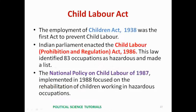Regarding the Child Labour Act: the first child labour act was implemented in India in 1938 under British India. The Children Act of 1938 was the first act to prevent child labour, but in practice there was no effective prevention even after independence. The Indian Parliament then enacted the Child Labour Act of 1986, which identified 83 occupations as hazardous. The National Policy on Child Labour of 1987, implemented in 1988, focused on the rehabilitation of children working in hazardous occupations.